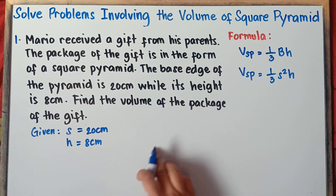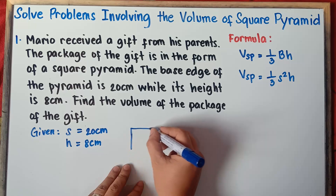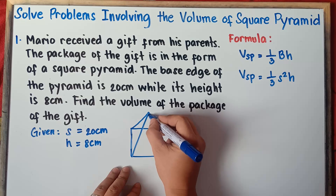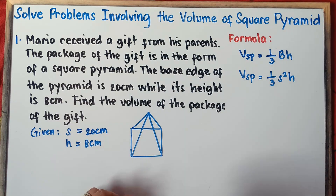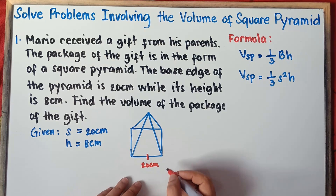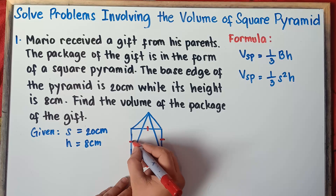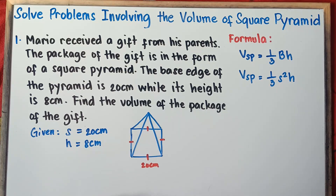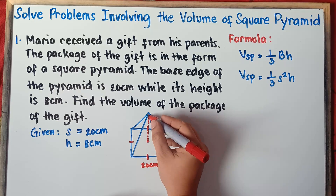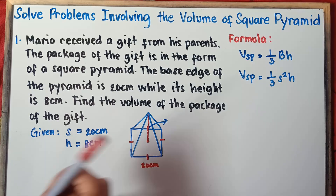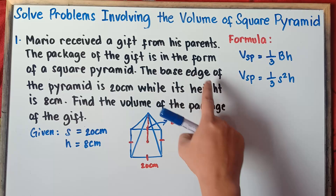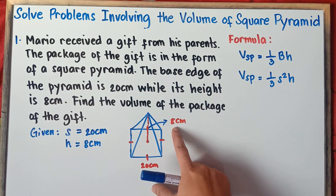We can illustrate this for better understanding. We have a square pyramid — draw a square. The base edge or side is 20 centimeters, so all four sides of the square base are 20 centimeters each, because we have a square base. The height goes from the apex to the center part of the base — that is 8 centimeters. Since we have given base side and height, we need to use the second formula.